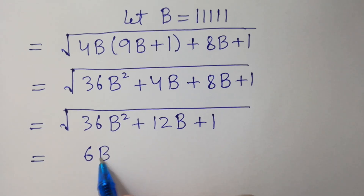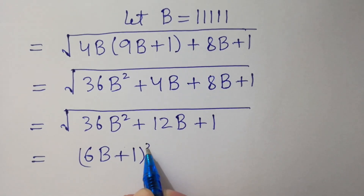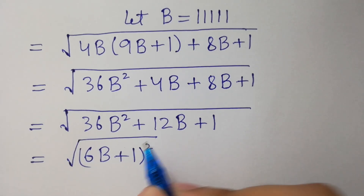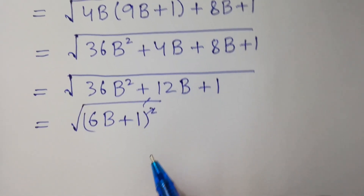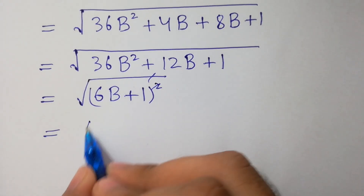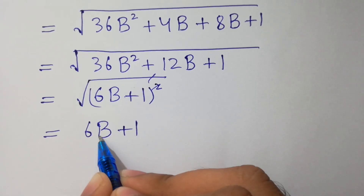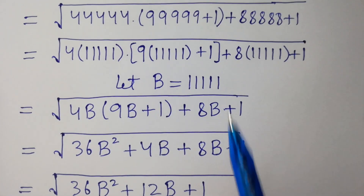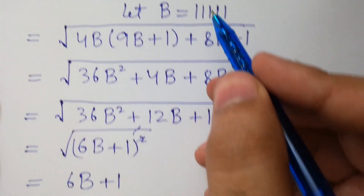The square root of (6b + 1)² — the square will be cancelled by the square root, giving us 6b + 1. Since b equals 5 times 10^5, we can substitute here.